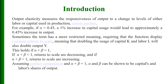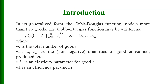If we assume perfect competition and alpha plus beta equals 1, then alpha and beta can be shown to be capital's and labor's shares of output respectively. In its generalized form, the Cobb-Douglas function models more than two goods and may be written as f(x) = A × ∏ xᵢ^λᵢ for i from 1 to n, where n is the total number of goods, x₁ to xₙ are non-negative quantities of goods consumed or produced, λᵢ is the elasticity parameter for good i, and A is the efficiency parameter.